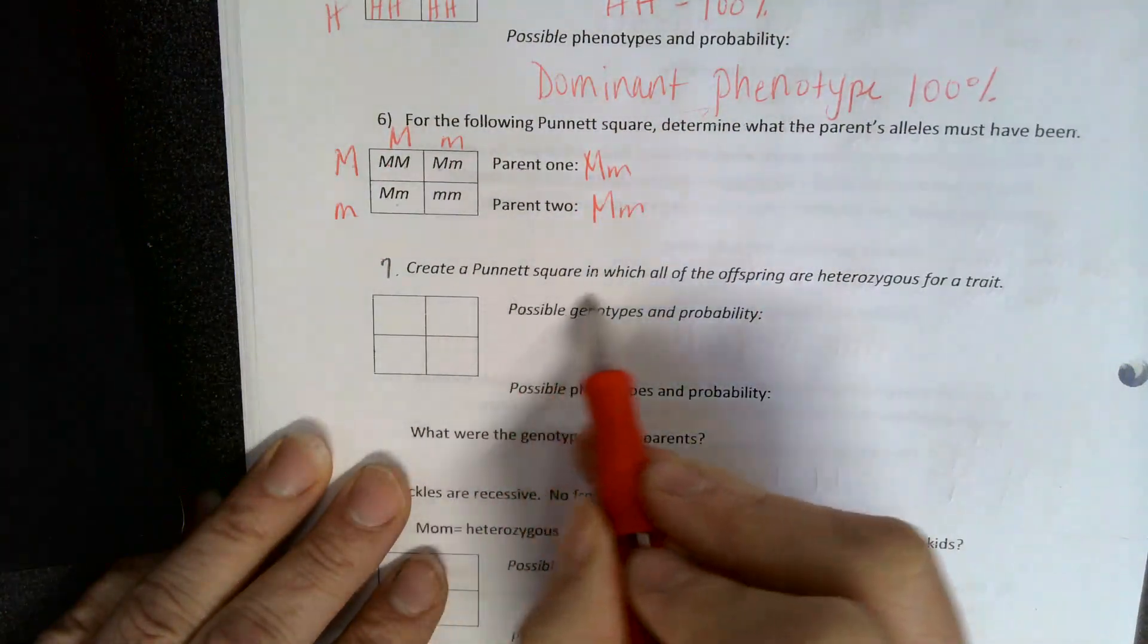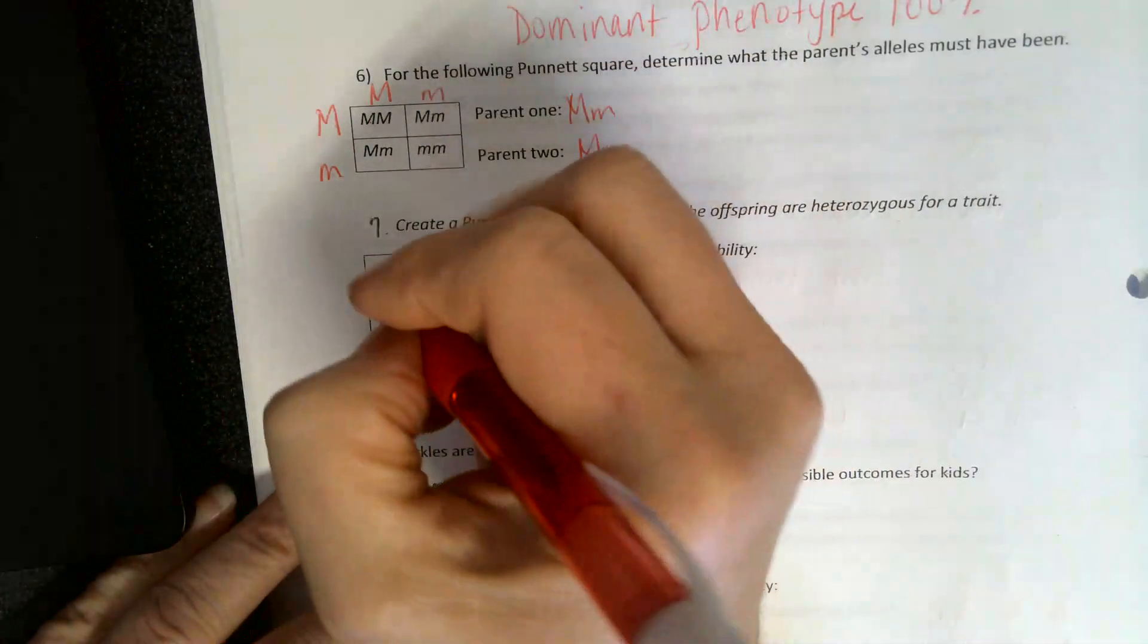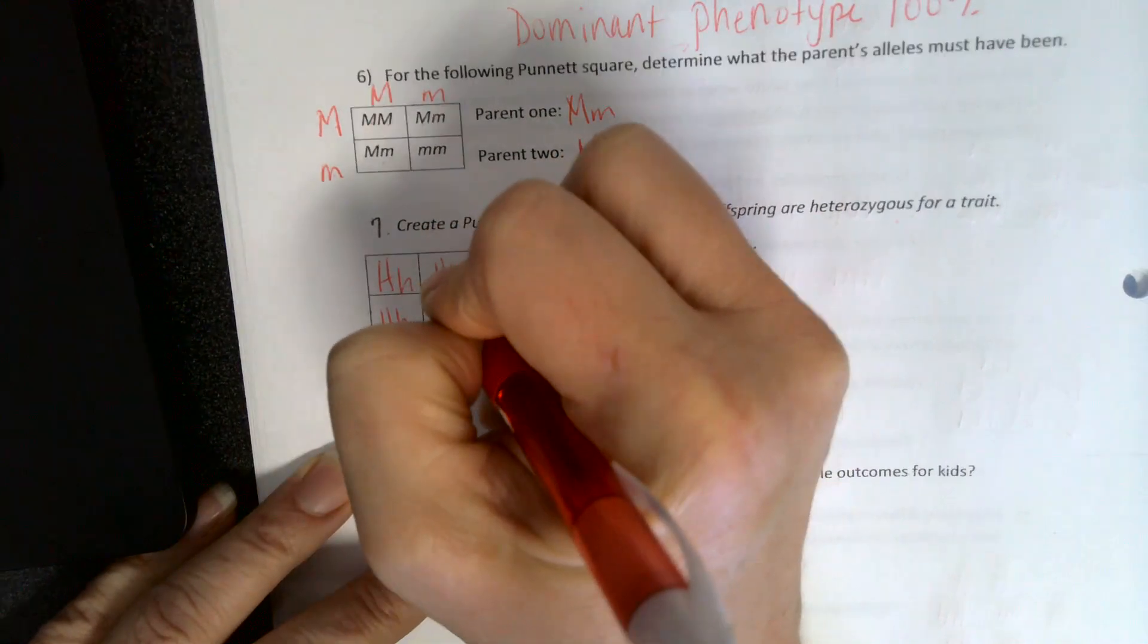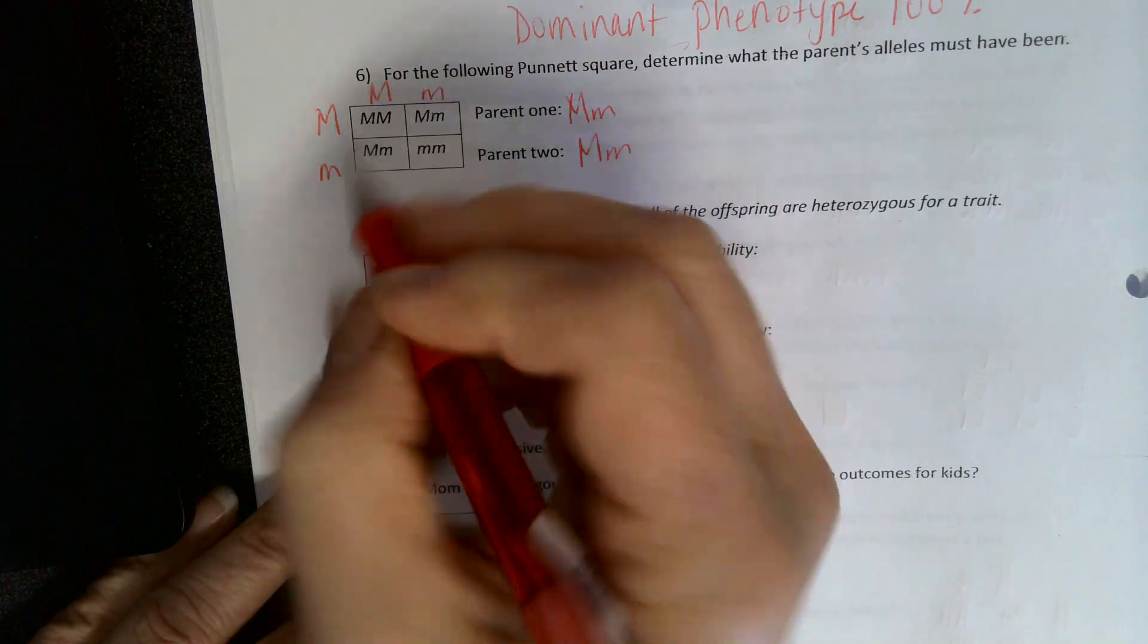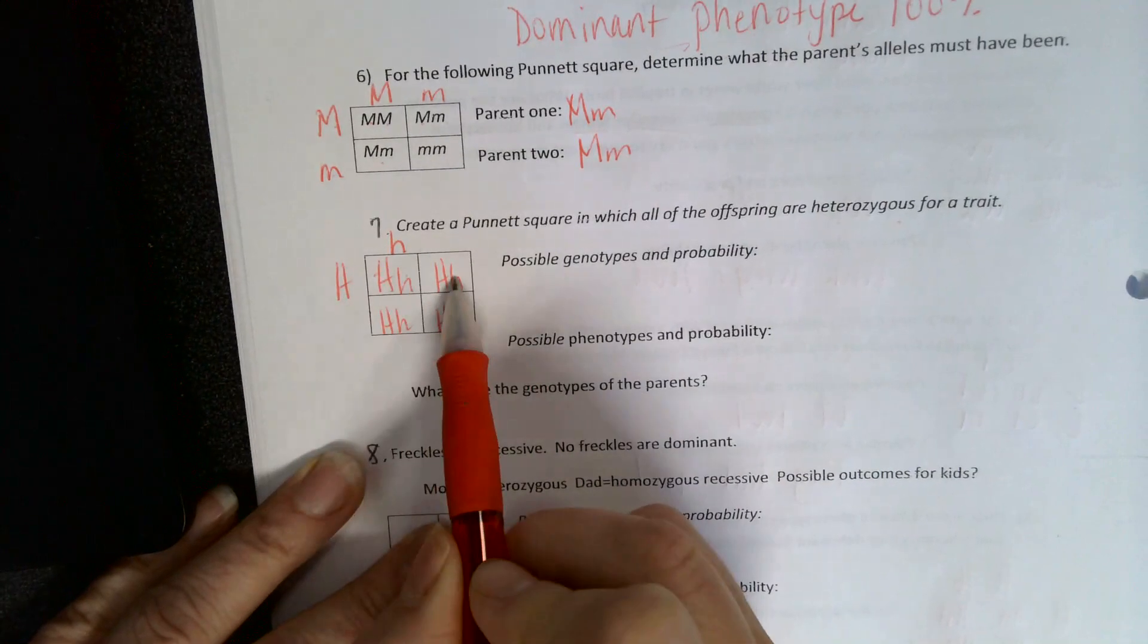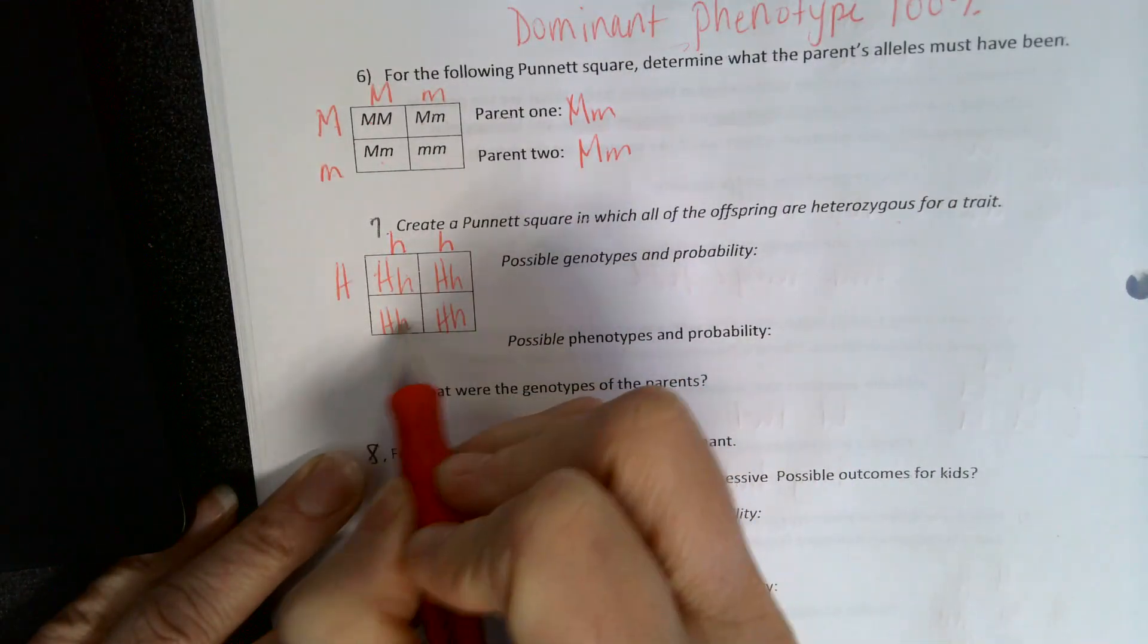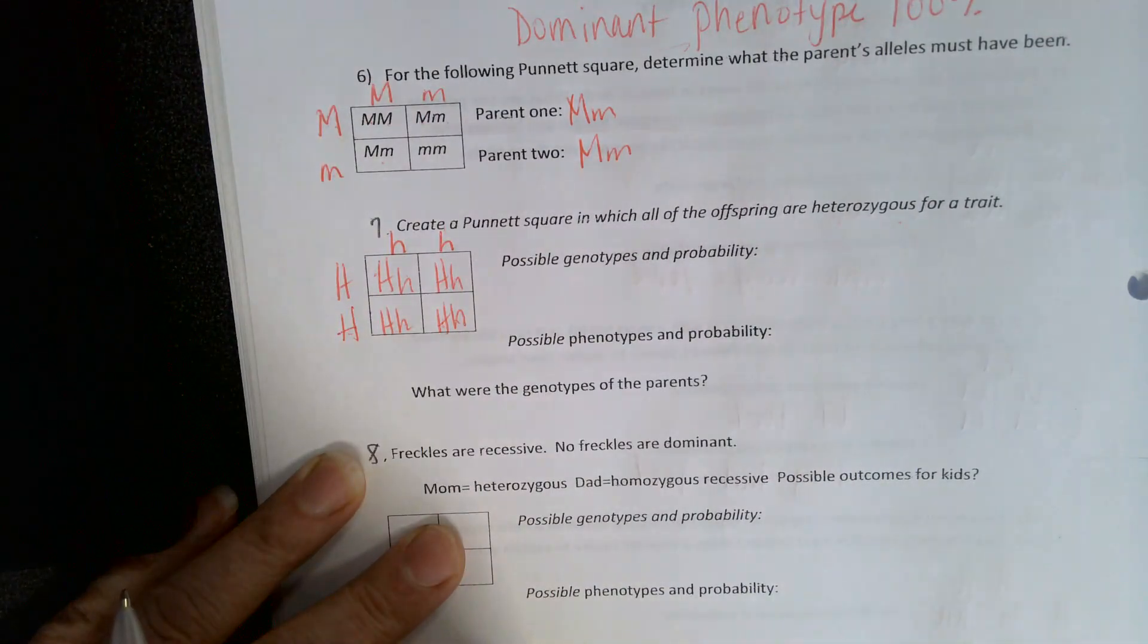Okay, create a Punnett square in which all offspring are heterozygous. So you could work backwards as well. If they're all heterozygous, this is what they look like. So work backwards, okay? Big H, little H, so we're going to have a big H and a little H here. Big H comes from there. Then a little H, we must have one there. Big H, little H, we get our little H here, so I must have a big H here. Big H, little H, that works out.